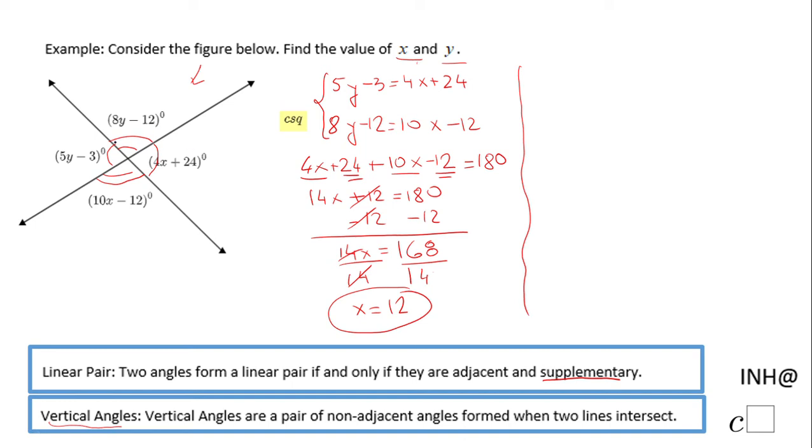Now we're going to look at this angle, which is 8y minus 12—8y minus 12, I'm sorry—and this angle, which is 5y minus 3. Both those two angles form a line, right? And they are supplementary.